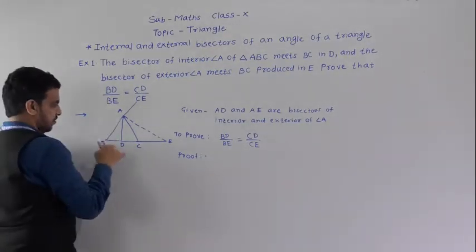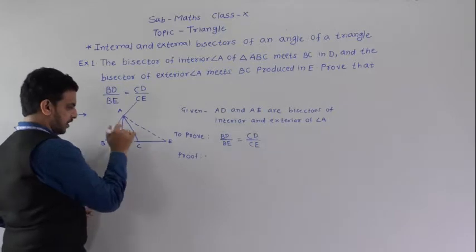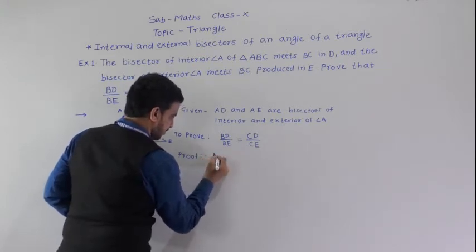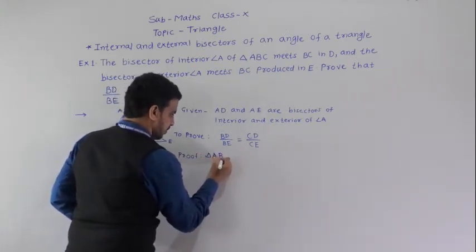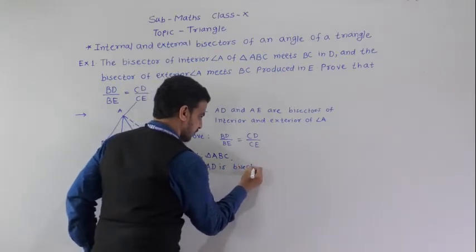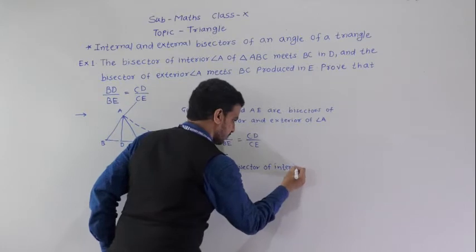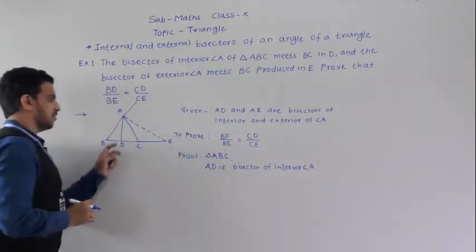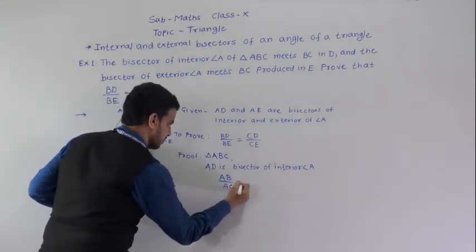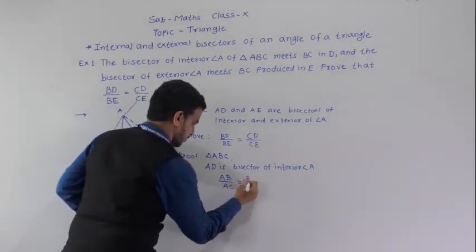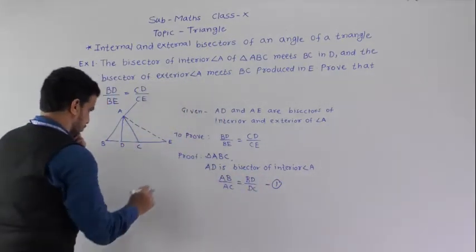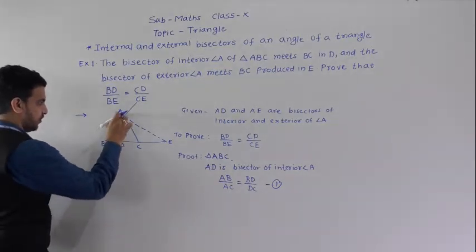In triangle ABC, AD is the bisector of interior angle A. By the interior bisector theorem, we can write AB/AC = BD/DC. We give this equation number 1.